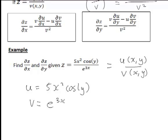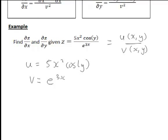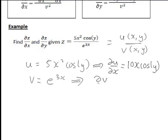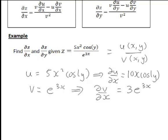Let's start by finding the partial derivative of z with respect to x. We need the partial derivative of u with respect to x, treating y as a constant, which gives 10x·cos(y). And since v equals e to the 3x, the partial derivative of v with respect to x is 3e to the 3x.